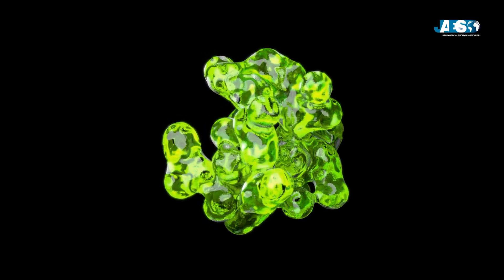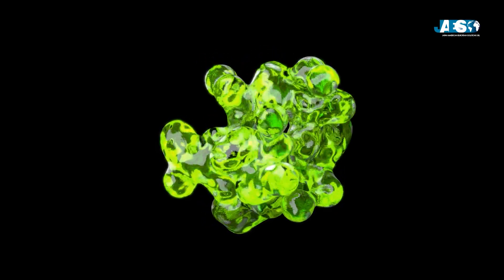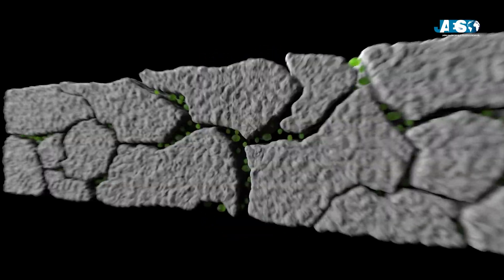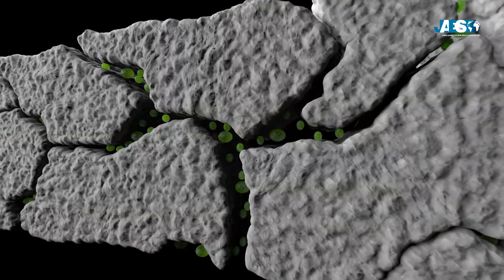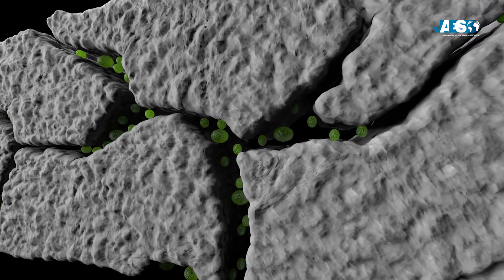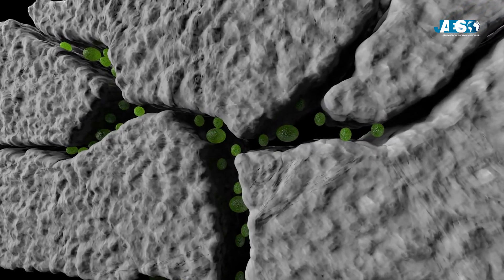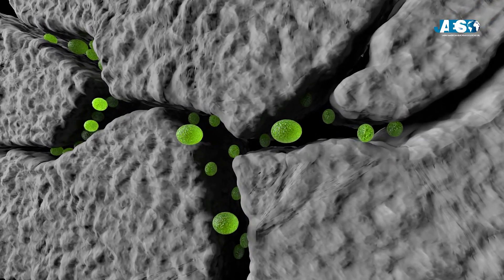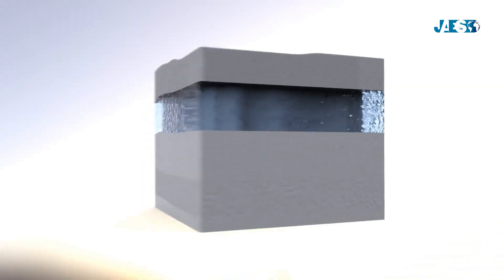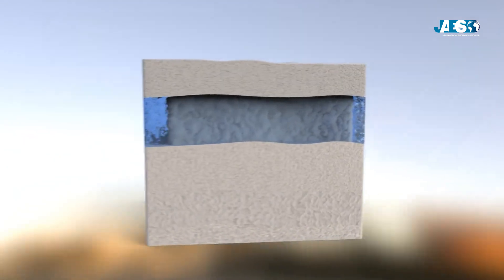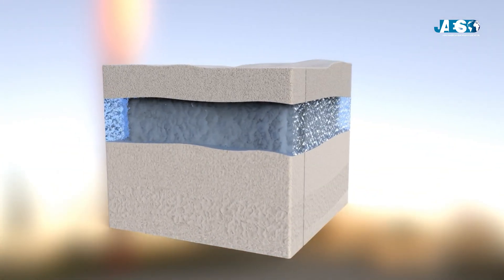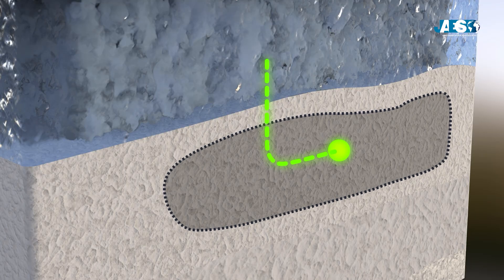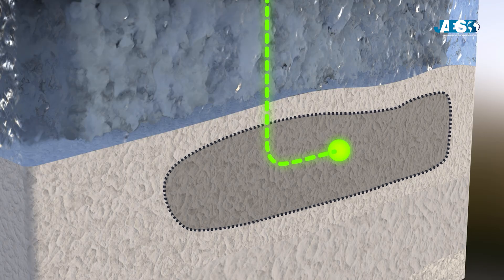Have you ever heard of shale gas? It is methane gas trapped in the micro porosity of clay rocks found in unconventional reservoirs. In this video, we will explain what it is, where it is found, and how it is extracted.